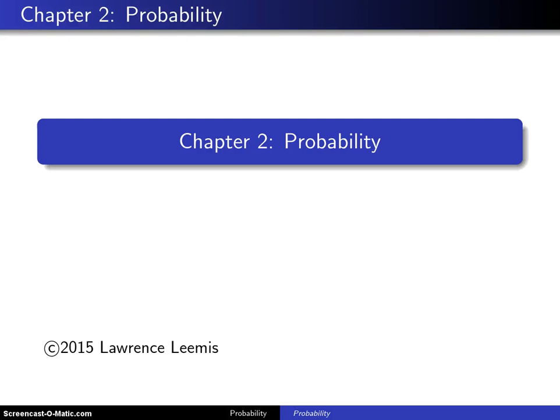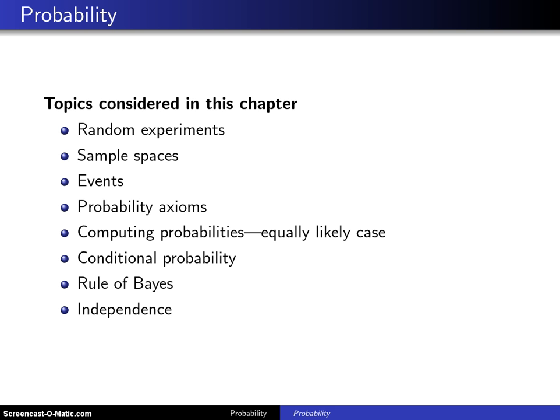Chapter 1 contains some mathematical tools which are very helpful in solving probability problems, namely counting techniques, also known as combinatorics, and set theory. This chapter introduces probability, and here is an outline of the topics that will be considered in this chapter.